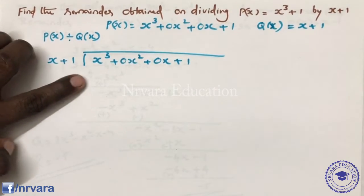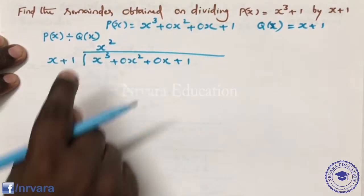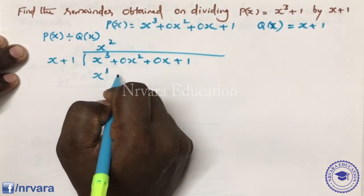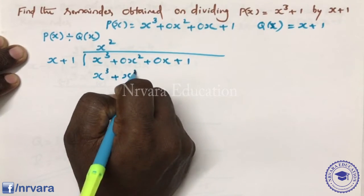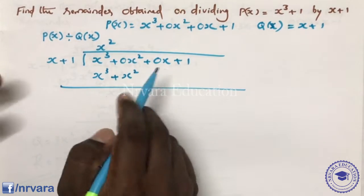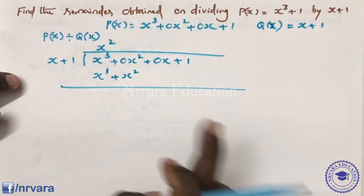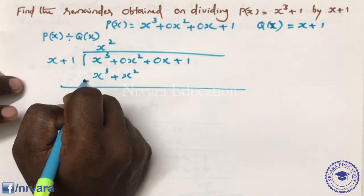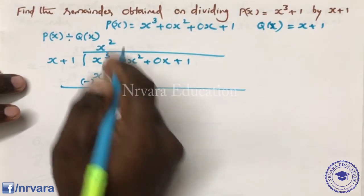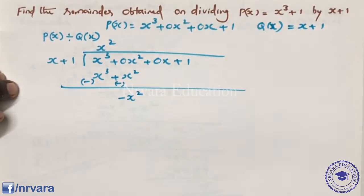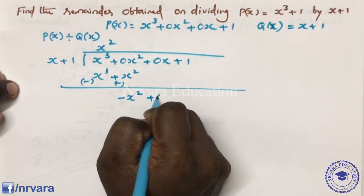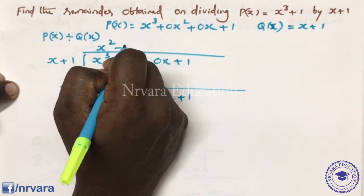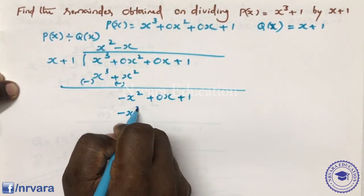Multiply x into x, giving x cube. x square into x gives x square. Now the corresponding element: add, then sign change — minus minus becomes plus. So minus x square. Then multiply minus x square into x, getting minus x. Minus x into plus 1 gives minus x, sign change gives plus.